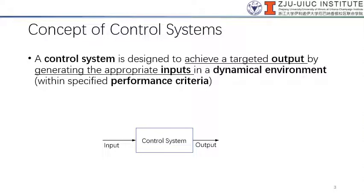Let's take a look at the concept of control systems. A control system is really something designed to achieve a targeted output or outcome by generating the appropriate input in a dynamic environment. As engineers, we are also interested in making sure that the control system is working within a specified performance criteria. It is not just good enough to say whether something is working or not — we want to know how well something is working.